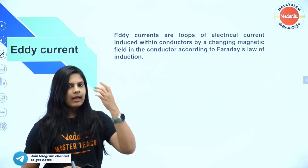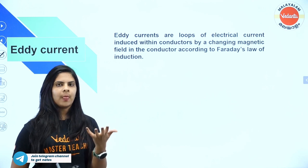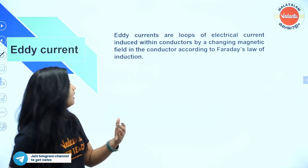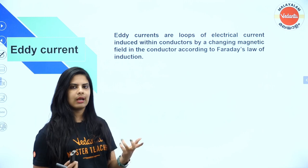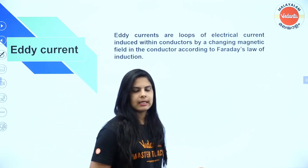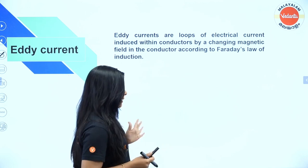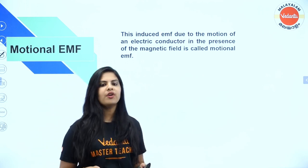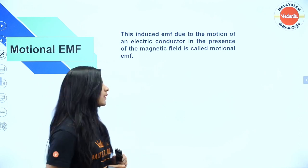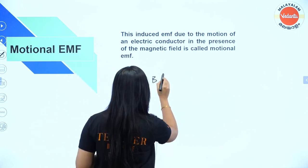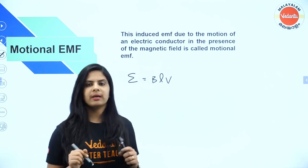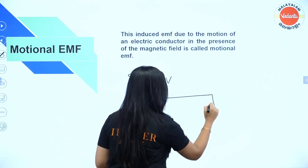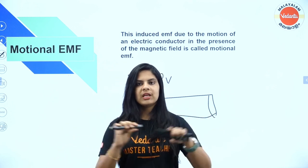Eddy current is an unwanted or useless current. It is induced when the magnetic field changes in an electrical conductor. An example is train magnetic brakes. It is induced due to the motion of an electrical conductor in the presence of a magnetic field.